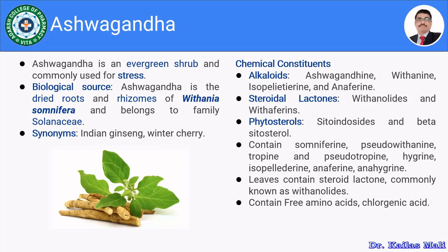Ashwagandha is also known as Indian ginseng or winter cherry — these are the synonyms for Ashwagandha. It is also known as Withania. Look at the slide so you will see how the drug looks like. We are using the roots and rhizomes of the Ashwagandha.